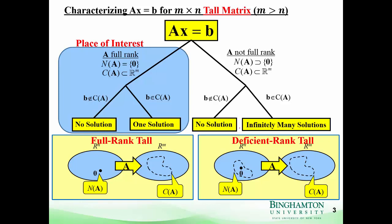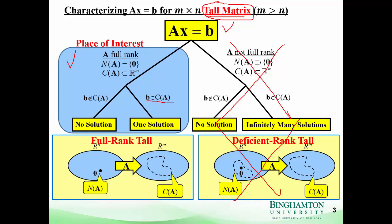Here we're showing the slide for a tall matrix. We've got our AX equals B. When we have a full-rank tall matrix, if B lies in the column space, then we have one solution — that's the unique solution scenario. If B does not lie in the column space, then we have no solution. We don't want to end up with infinitely many solutions in this setting.